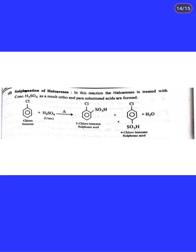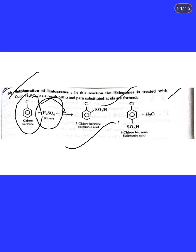Third: the Balz-Schiemann reaction — benzene diazonium chloride is treated with HBF4 to form benzene diazonium fluoroborate, which on decomposition gives fluorobenzene, nitrogen gas, and BF3. Fourth: sulfonation of haloarenes — treating chlorobenzene with concentrated sulfuric acid gives ortho and para products: 2-chlorobenzene sulfonic acid and 4-chlorobenzene sulfonic acid, with the para product being the major product.